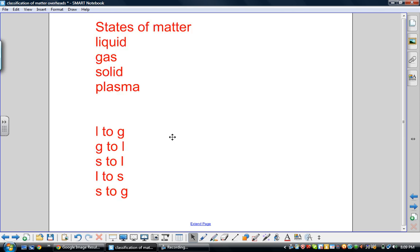We talked about states of matter as a physical property. States of matter are liquid, gas, solid, and plasma. And we talked about the names of the changes. When liquid turns to gas, we call that evaporation. Gas turns to liquid, we call that condensation. Solid to liquid is melting, liquid to solid is freezing, solid to gas is called sublimation.